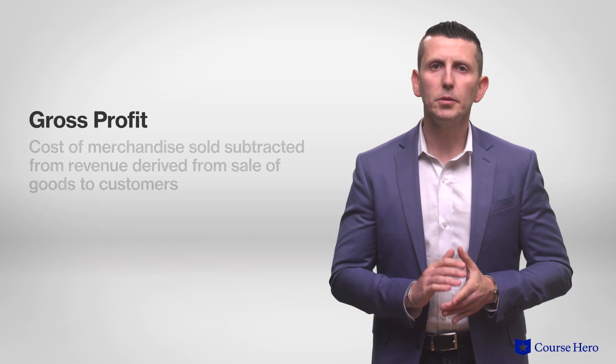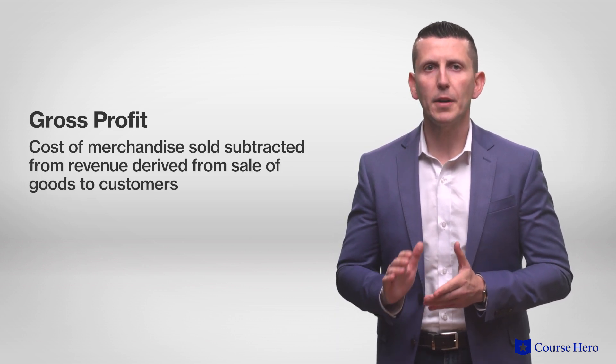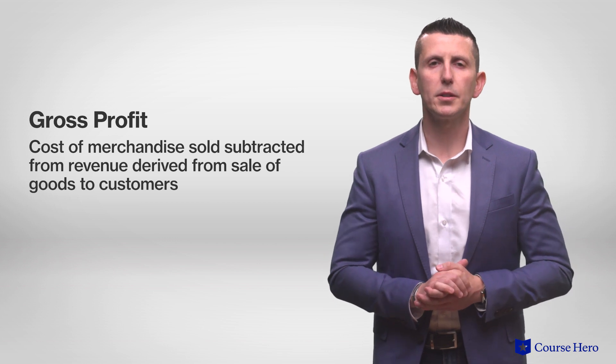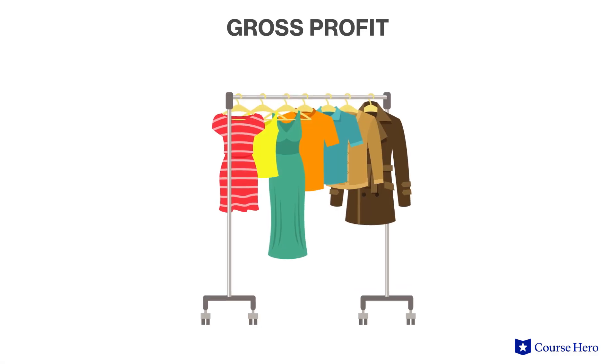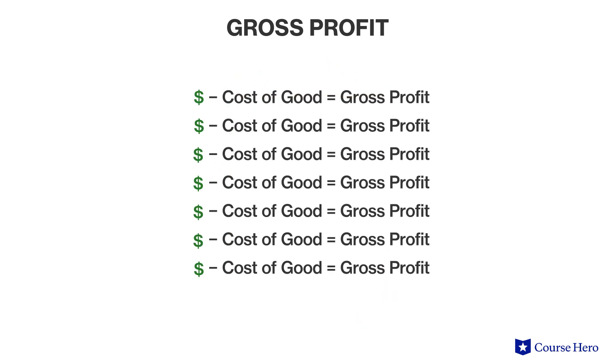The first step in preparing a multiple step income statement is to calculate gross profit. To compute gross profit, the cost of merchandise sold is subtracted from revenue derived from the sale of goods to customers. Gross profit shows how much profit was made purely on the merchandise that was sold, before taking into account all the operating expenses.